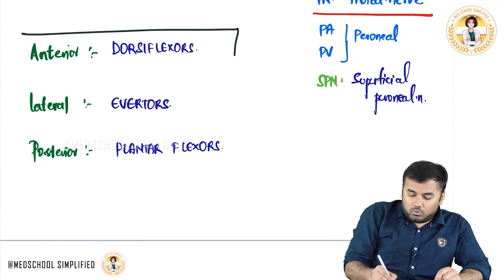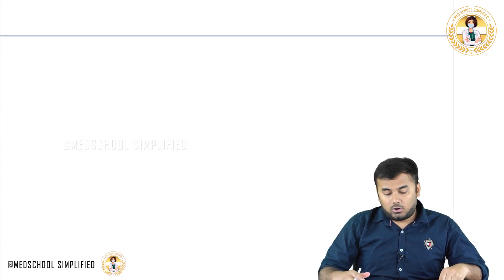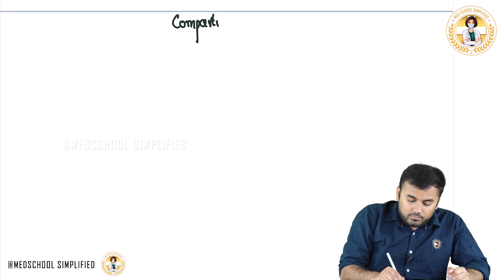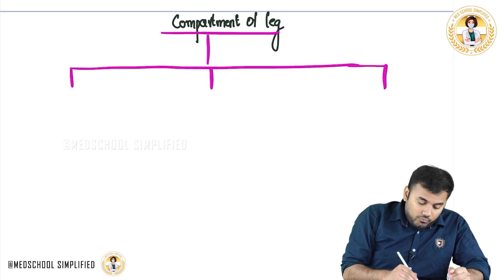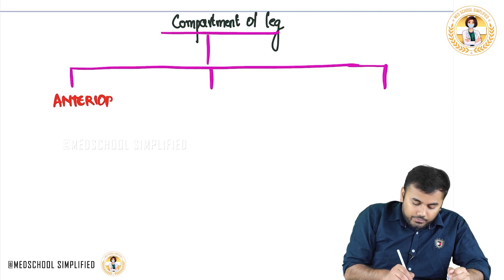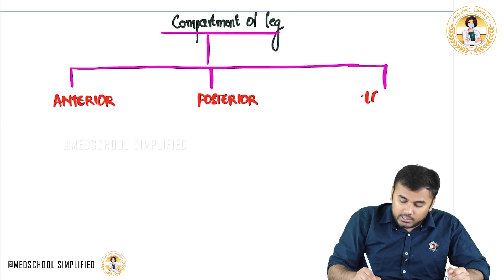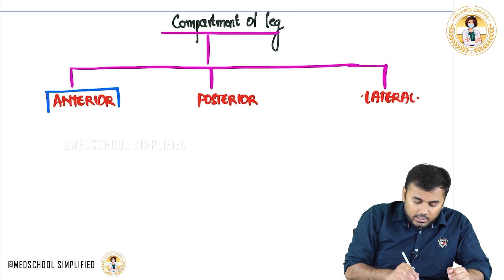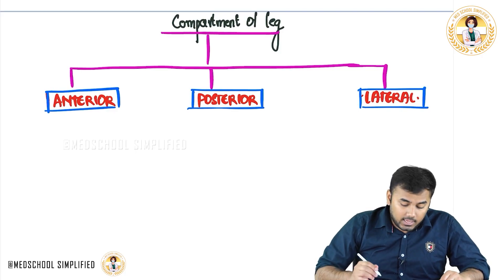After the function of the muscles, the only thing left is the names of the muscles. The compartment of the leg is mainly divided into three parts: the anterior compartment, the posterior compartment, and the lateral compartment. The posterior compartment is further divided into two more compartments — superficial and deep.